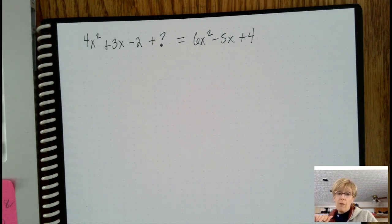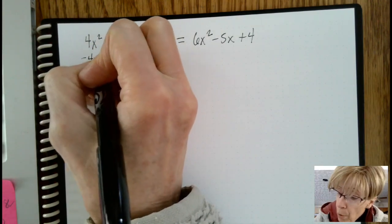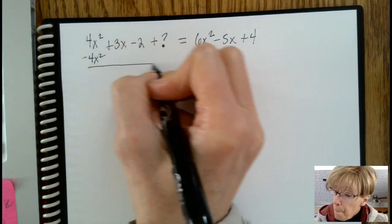What we're going to do is start by subtracting 4x squared from both sides. And when we do, 3x minus 2 plus the question mark over here, and 6x squared minus 4x squared, and lined up the like terms, is 2x squared, and then we still have the minus 5x plus 4.